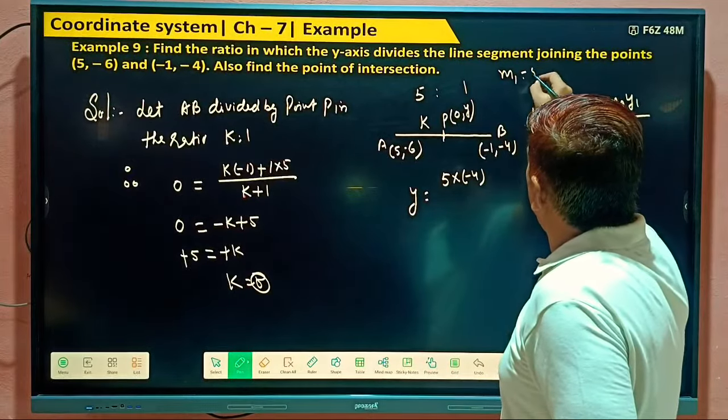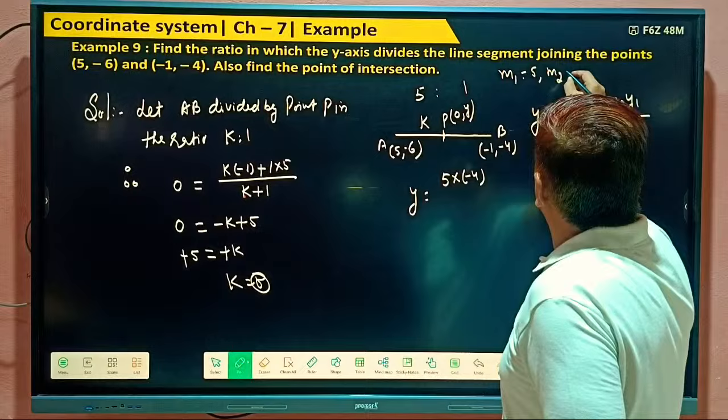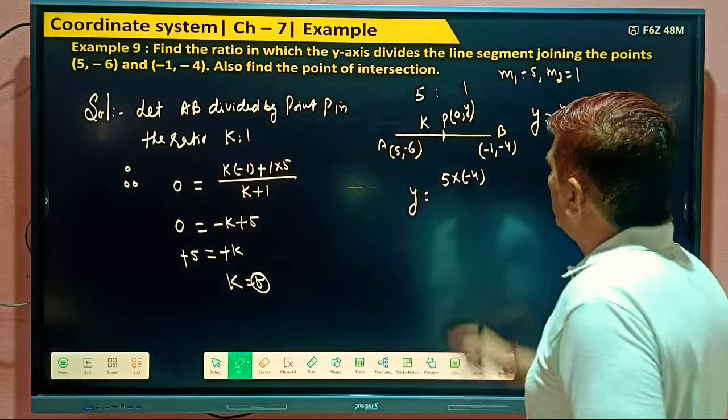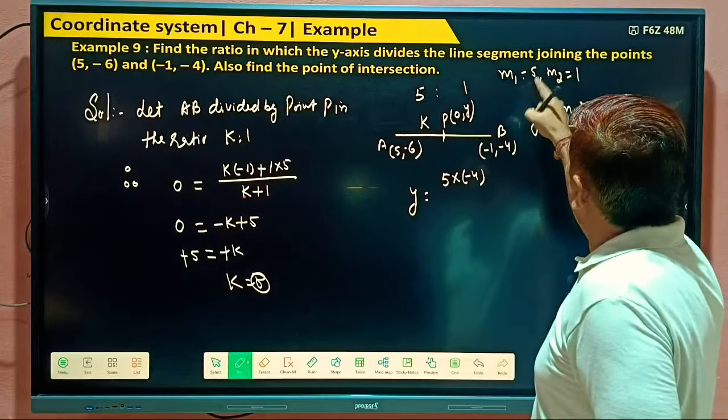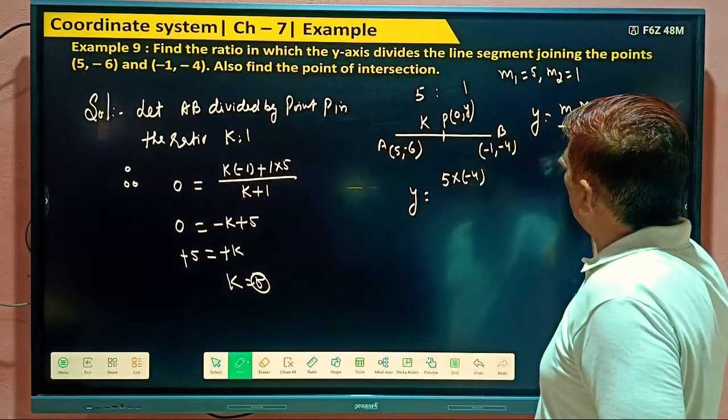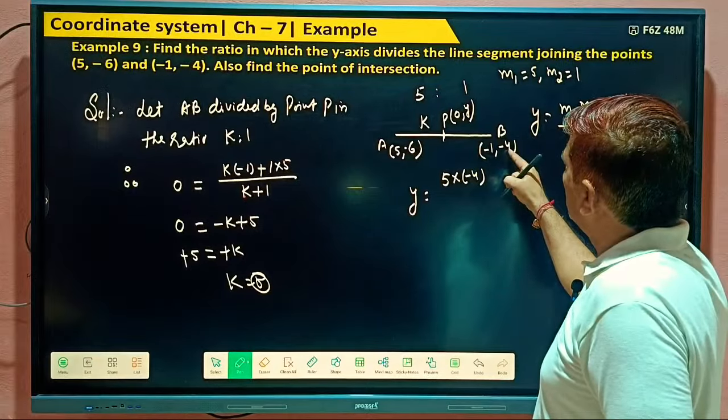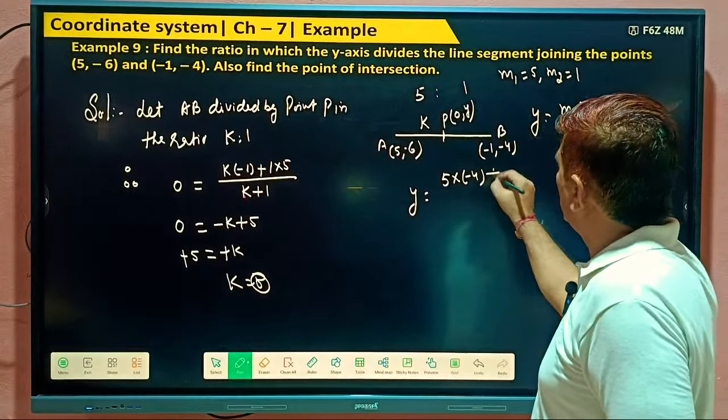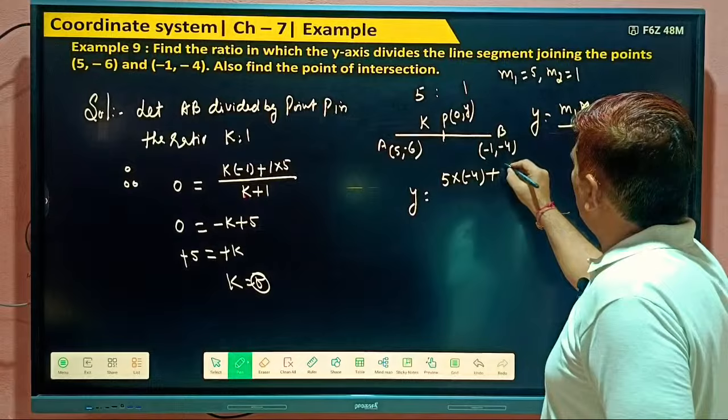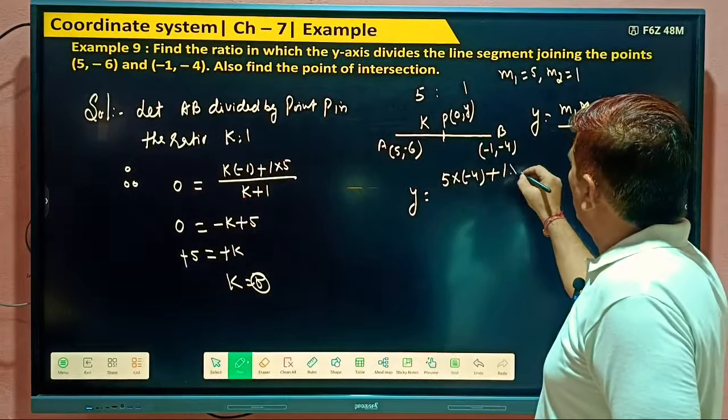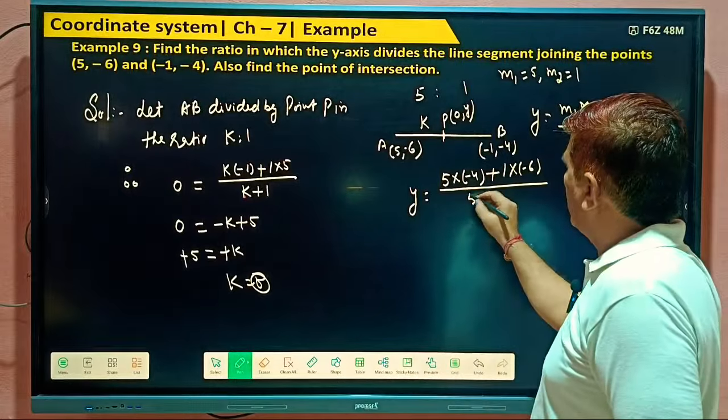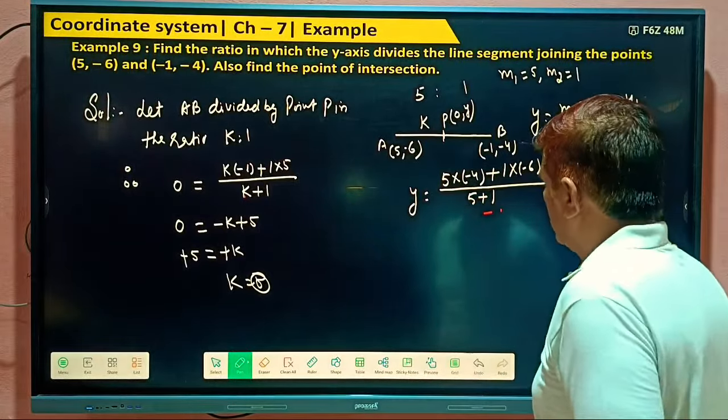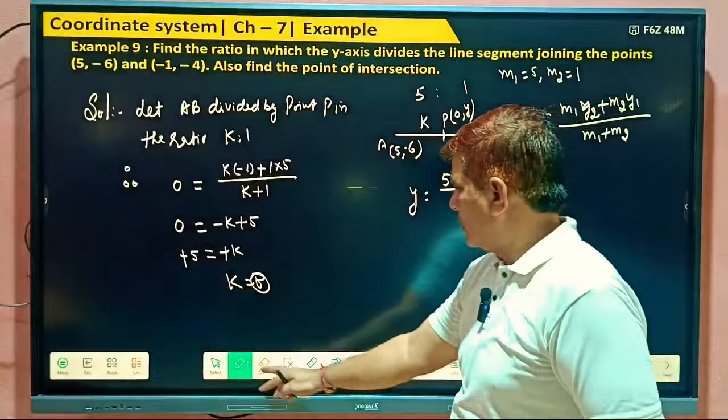M1 equal to 5 and M2 equal to 1. So I have written M1, M1 equal to 5, 5 Y2. Y2 is this 5, minus 4 plus M2 1 into minus 6 by 5 plus 1, by 5 plus 1. Yes or no?